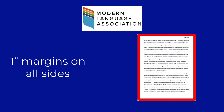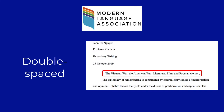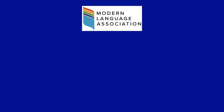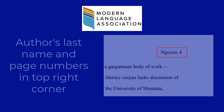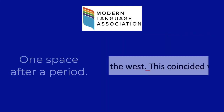All margins at one inch. Double spaced, even the works cited page. Each page features the author's name and page number in the upper right-hand corner. Only one space after a period.